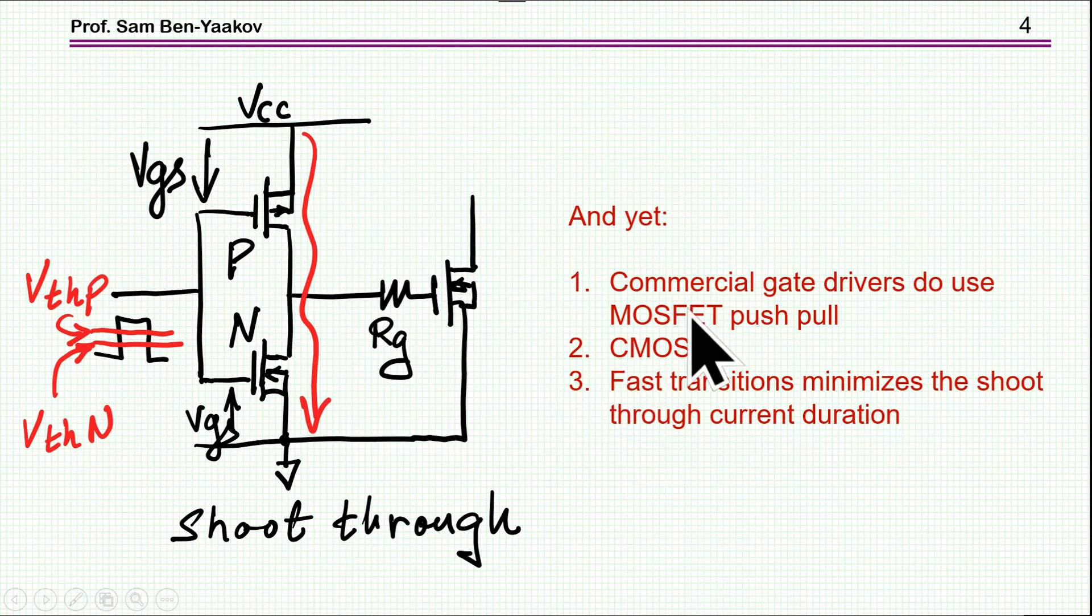And yet, we know that commercial gate drivers do use MOSFET push-pull in this configuration. And also, we know that there is a logic family, the CMOS family, which has exactly the same configuration. Now, the key is that if the transition here is very fast, then the time of this shoot-through is very short, and you can actually tolerate it to some extent.